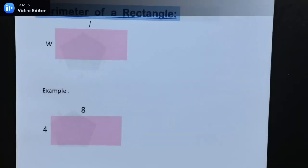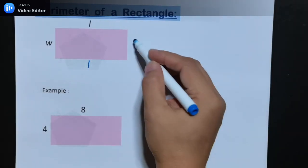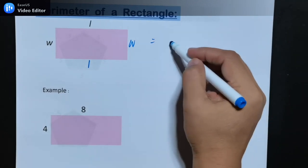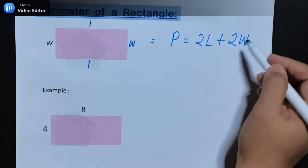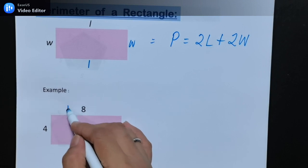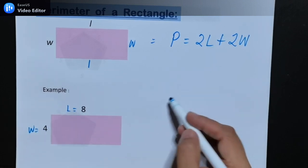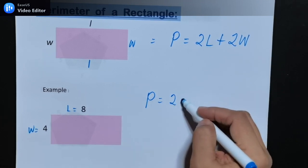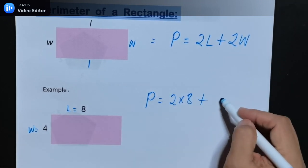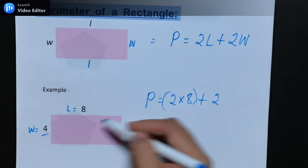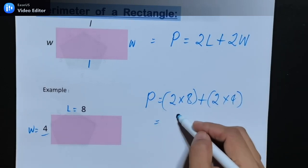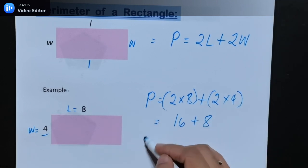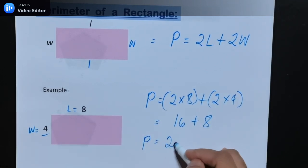Next, perimeter of a rectangle. There are 2 lengths and 2 widths, so the perimeter is 2L plus 2W. From the example, length = 8 and width = 4. So the perimeter is 2 times 8 plus 2 times 4, which is 16 plus 8. The perimeter is 24.